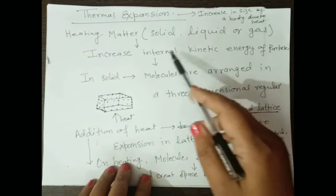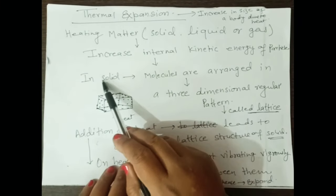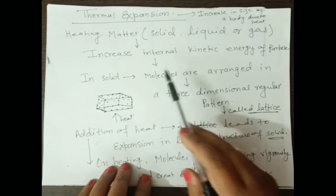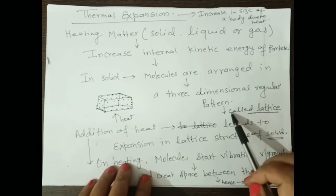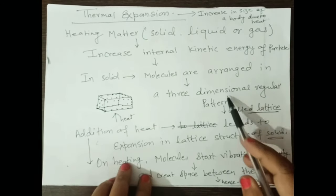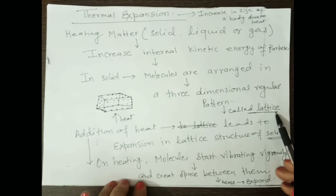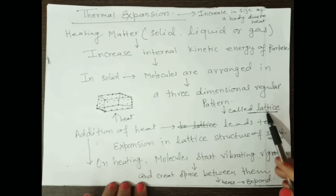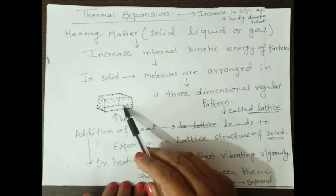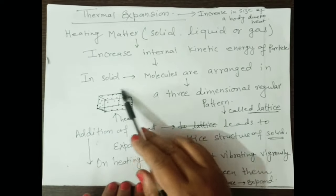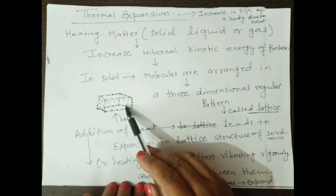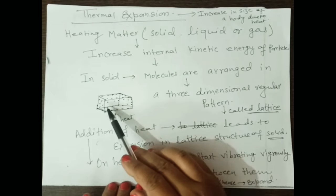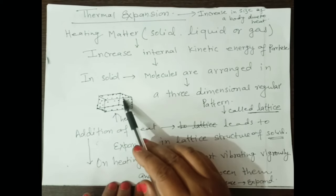What happens in the case of a solid? In a solid, particles are arranged in a three-dimensional regular pattern called a lattice. When heat is added to this three-dimensional figure, the solid has a fixed shape with length, breadth, and height.